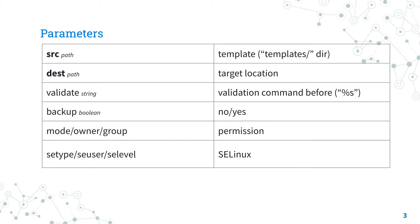Templates are usually stored under a templates directory with the j2 file extension. The dest parameter specifies the path where the template is rendered on the remote machine. The validate parameter allows you to specify a validation command to run before copying into place — very useful with configuration files for services. Note that the special escape sequence %s will be expanded by Ansible with the destination path.